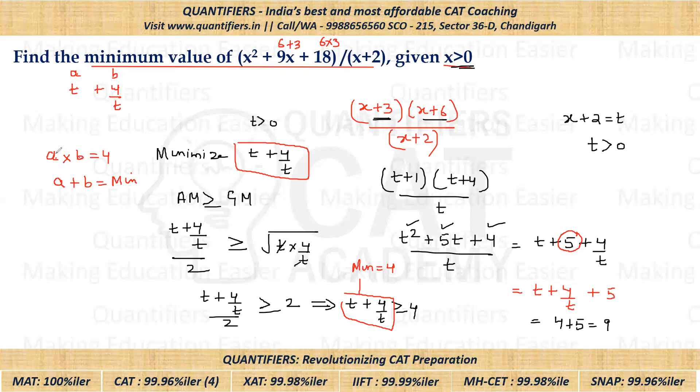So when will we get 4? We'll get 4 when both are equal, that means both of them will be equal to 2. So that means a is also 2, b is also 2. So 2 + 2, answer will be 4. That means minimum value of T + 4/T will be equal to 4.